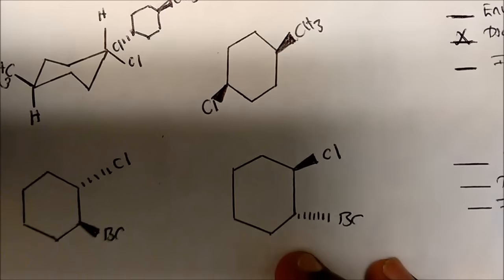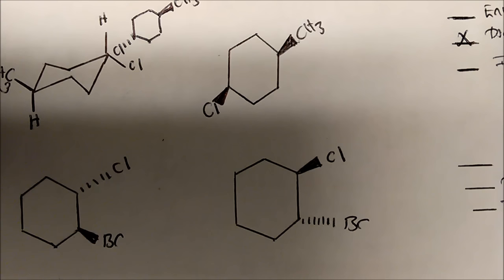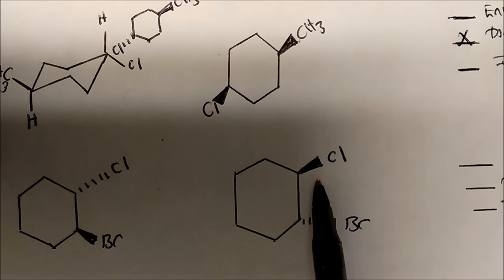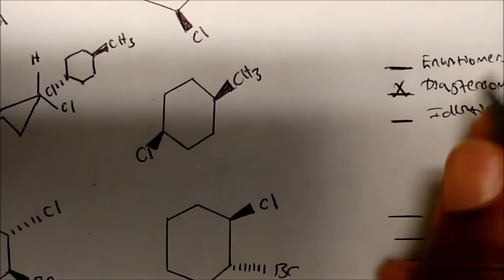How about this one? Both stereocenters change — the chlorine goes from a dash to a wedge, and the bromine goes from a wedge to a dash. This is simply enantiomers. When all your stereocenters change, that's what we classify as enantiomers.